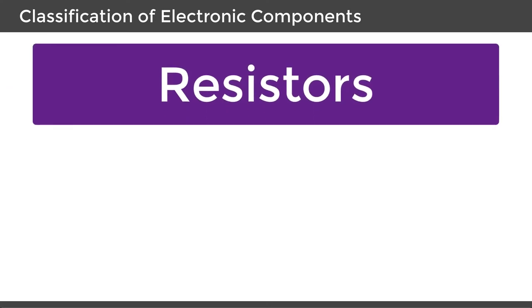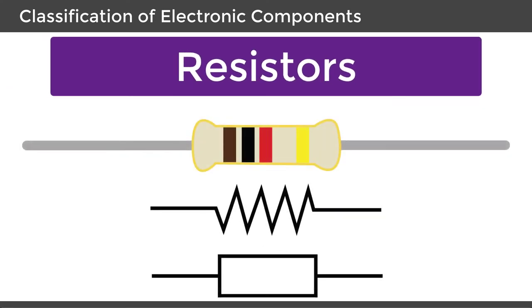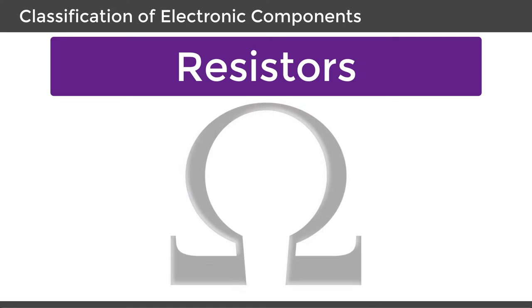Resistors. The component that opposes the flow of current is called a resistor. This opposing force is called the resistance of the material. It is measured in ohms.